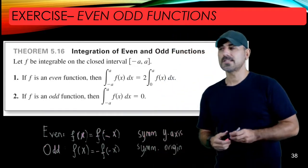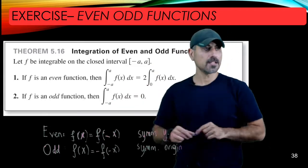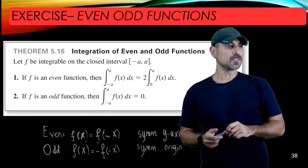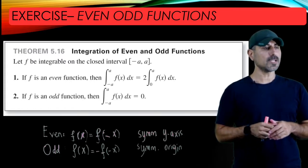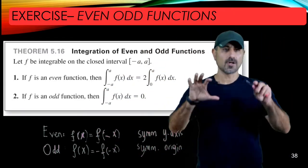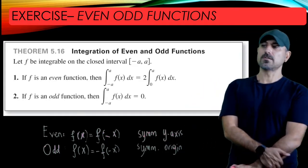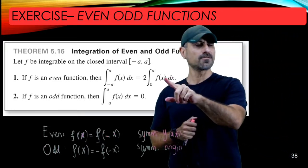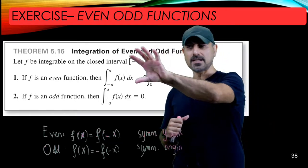This theorem says that if you start with an even function on a symmetric interval from -a to a and integrate over that interval, the value of the integral is twice the integral from 0 to a. So you don't need integration from -a to a since the graph is symmetric about the y-axis — just find the portion corresponding to the interval 0 to a and multiply by 2. Think of the y-axis as a mirror, and the area on the right is reflected through it.